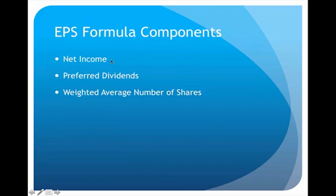If you consider each component of the formula individually: first, you have the net income, which simply comes from the income statement — very simple and straightforward. Then you have the preferred dividends. A lot of companies don't actually sell preferred stock, so if that's the case you don't have to worry about preferred dividends. But if they do sell preferred stock, you would certainly want to include those dividends in your EPS formula.